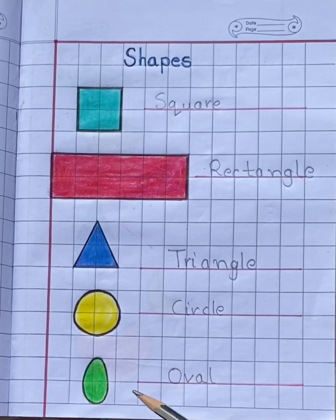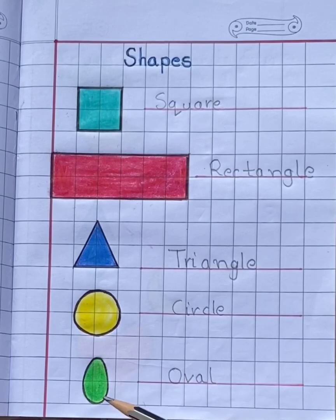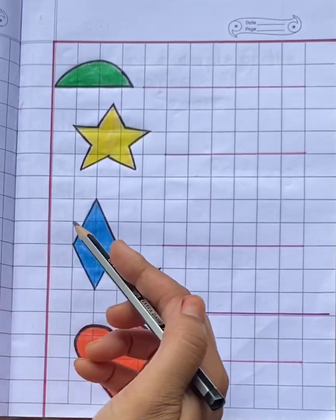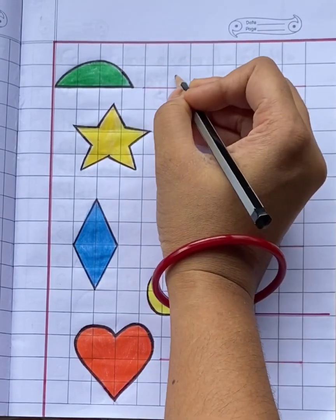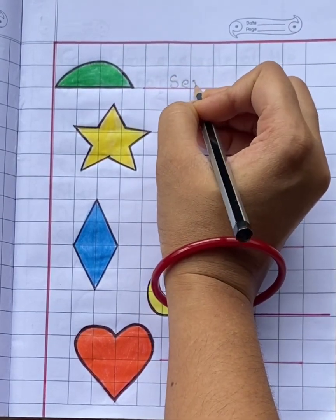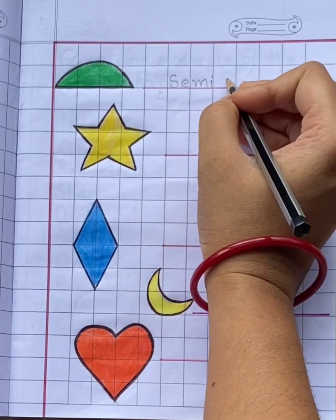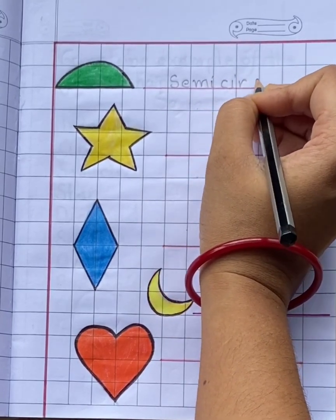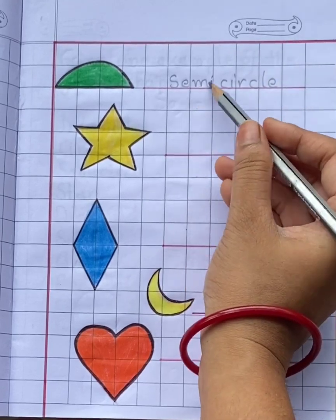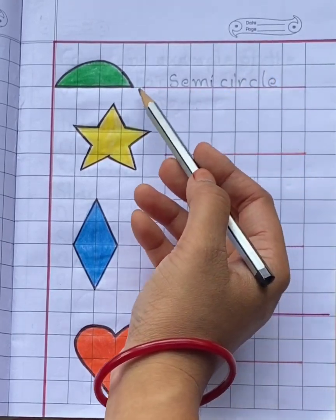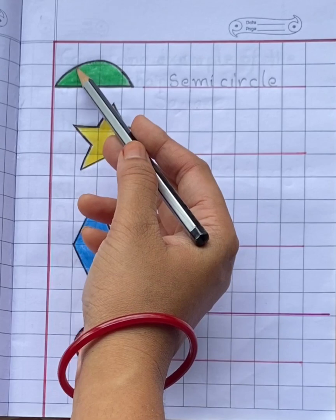Oval has no sides and no corners. Semi-circle. S-E-M-I, C-I-R-C-L-E. Semi-circle means just a half circle.